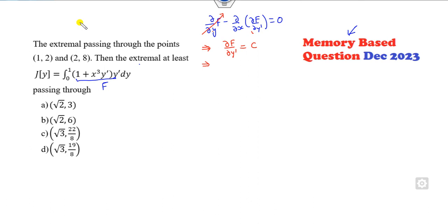So can you find this value? It's y dash plus x squared y dash squared. So can you find the partial derivative of this? 1 plus 2x cubed y dash is my constant. Now can you find the value of y from here? It's very easy. I can say 2y dash is c minus 1 over x cubed. Now I can integrate it.